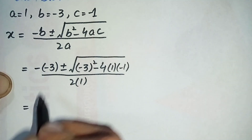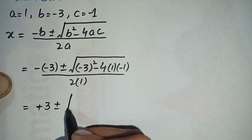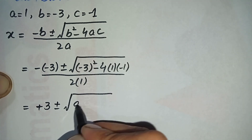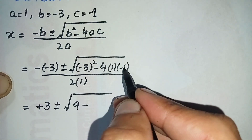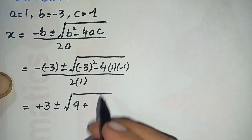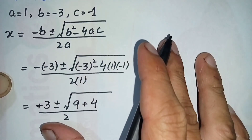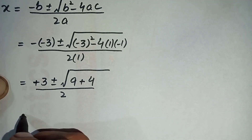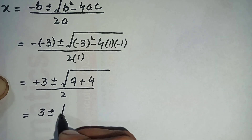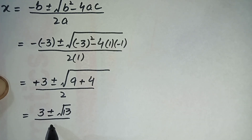Simplifying: minus minus 3 gives plus 3; (minus 3)² equals 9; minus 4 times 1 times minus 1 gives plus 4; so under the square root we have 9 plus 4 equals 13. Divided by 2 times 1 equals 2. This simplifies to 3 plus or minus square root of 13, divided by 2.